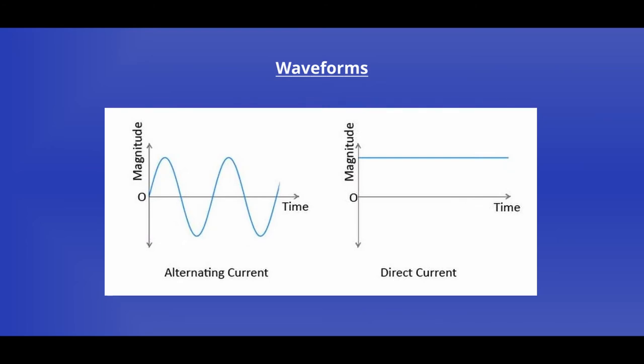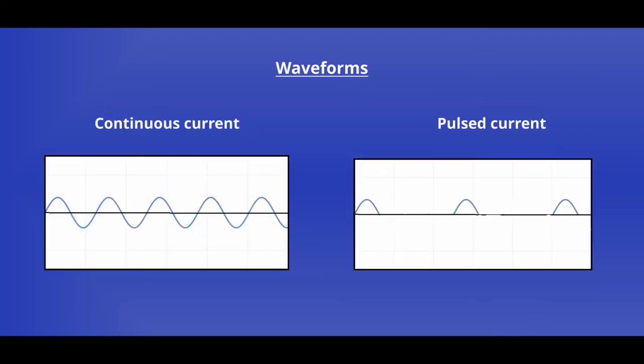So here's a basic look at our alternating current on the left and direct current on the right. In both examples, our current flow is continuous. In some cases, it's beneficial to have breaks in our current flow. So instead of a continuous waveform, we use a pulsed waveform.